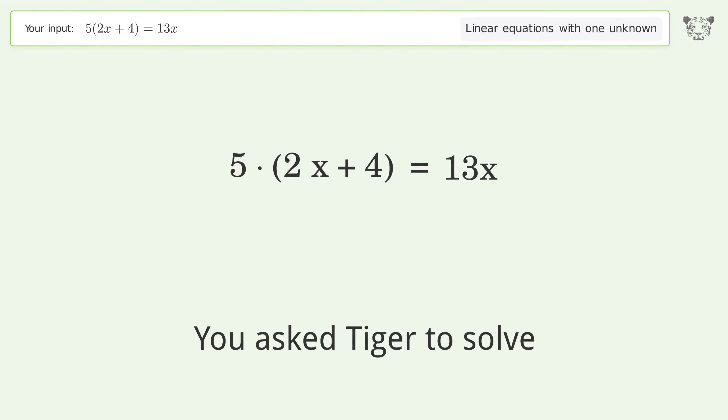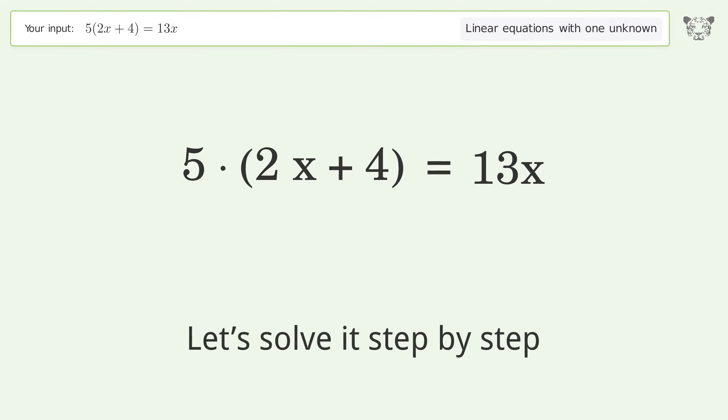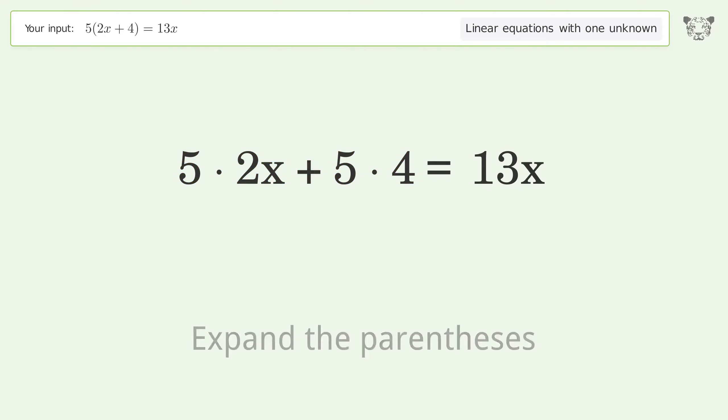You ask Tiger to solve this. It deals with linear equations with one unknown. The final result is x equals 20 over 3. Let's solve it step by step. Simplify the expression, expand the parentheses, multiply the coefficients, and simplify the arithmetic.